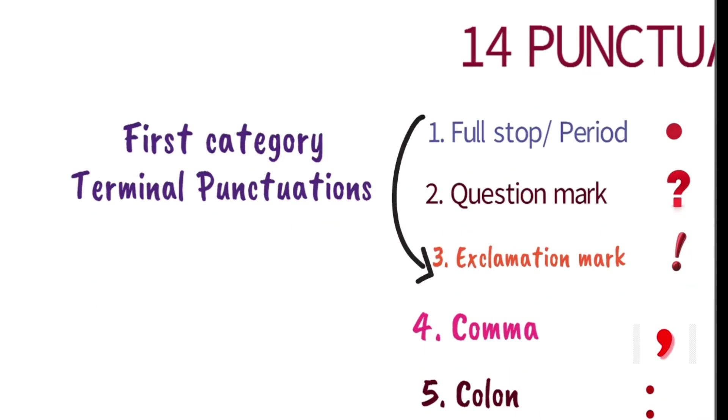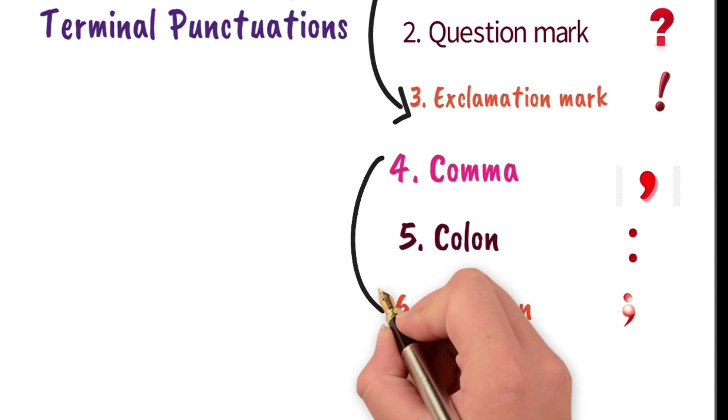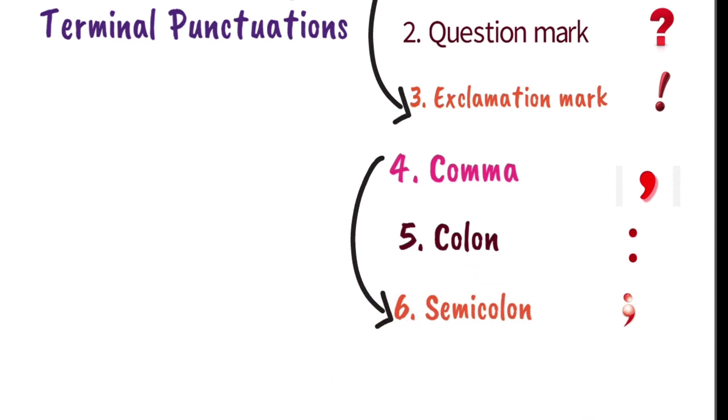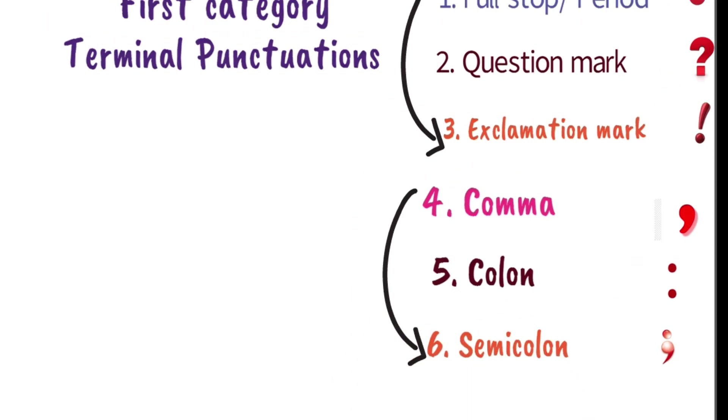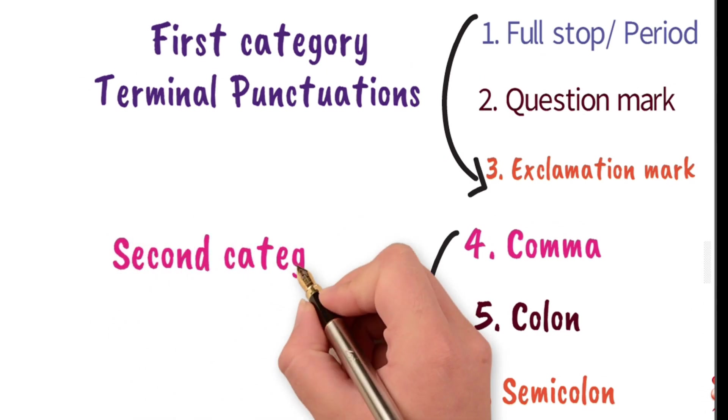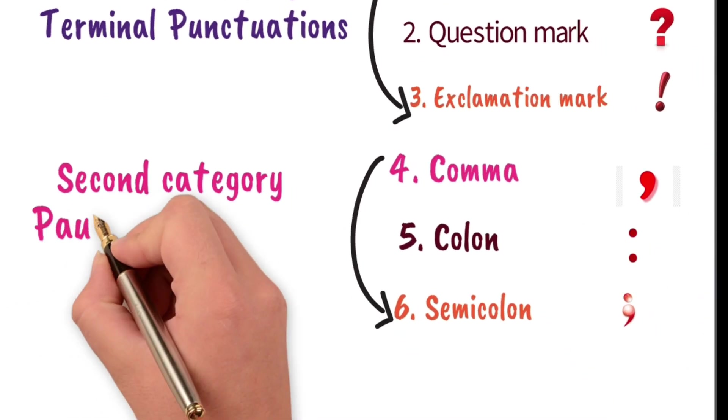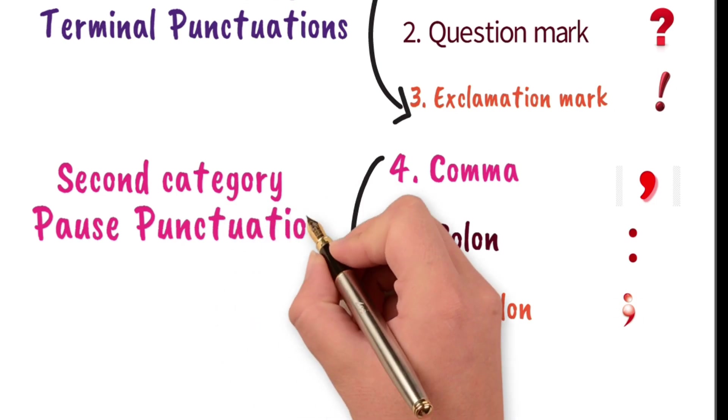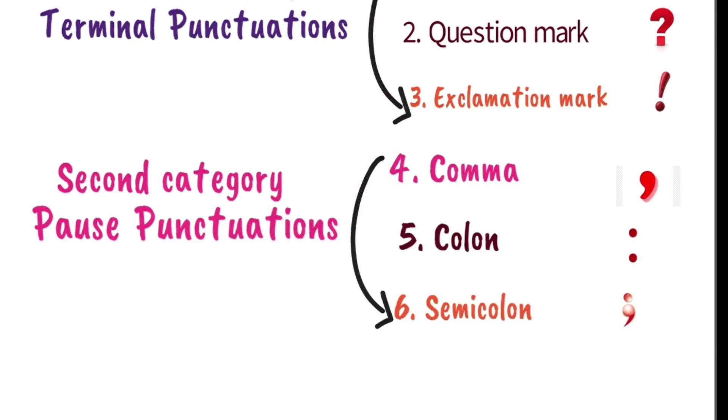In the second category, we put comma, colon and semicolon and they are known as pause punctuations. Because they are used when we pause for a brief time in a sentence, then we use these three punctuation marks. There are some other punctuation marks which are also included in this category, like the M dash and the ellipsis. But mainly we include these three punctuation marks in this category.